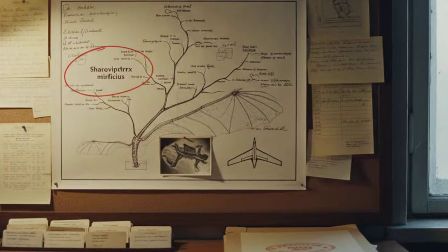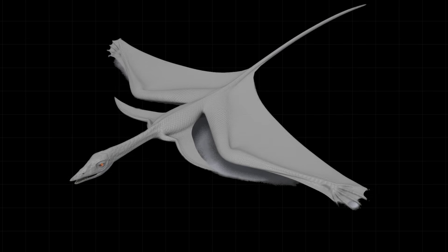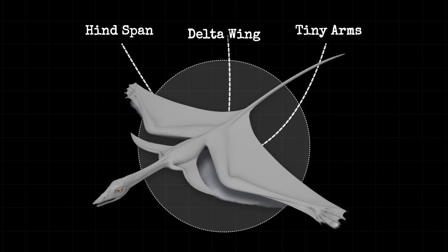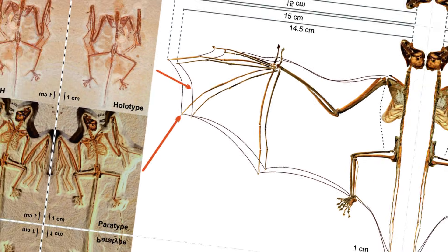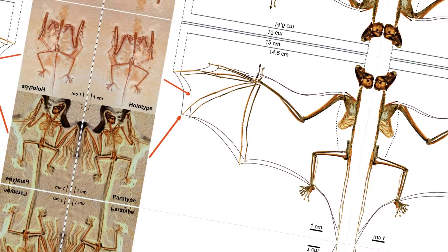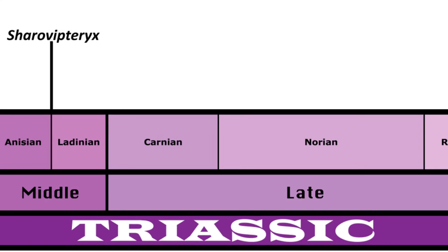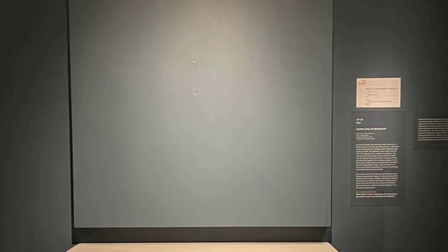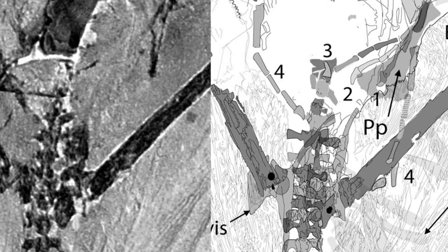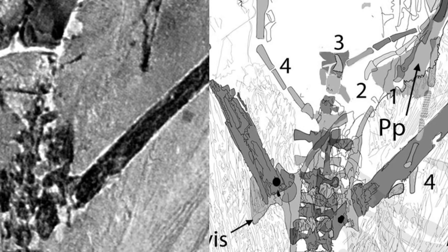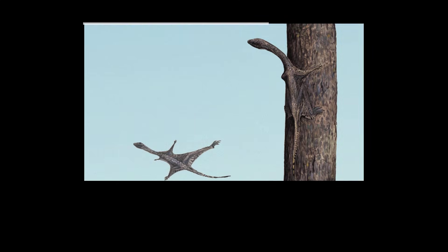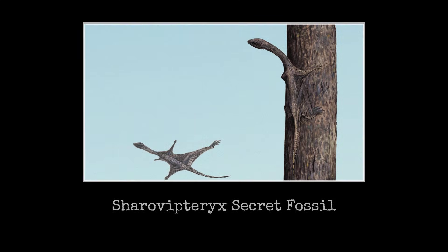Because what Sharov discovered was evolution's single attempt at building a delta wing glider out of a reptile. And the fossil record shows it tried this exactly once. One specimen ever found. No relatives. No descendants. No follow-up designs. Just this one fossil, frozen in the rock, legs spread wide, membranes stretched tight, captured at the moment it was gliding through a Triassic sky.